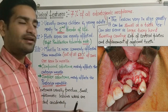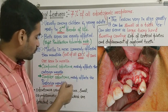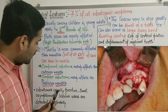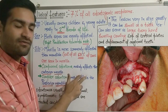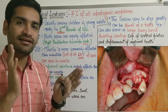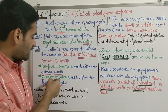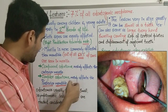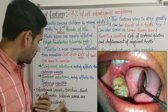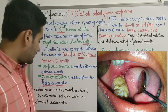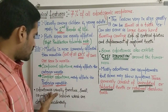Out of 100 cases of odontoma, 67 occur in maxilla and 33 in mandible. If we compare compound versus complex odontoma by site: compound odontoma mainly affects the anterior maxilla, while complex odontoma mainly affects the posterior mandible.